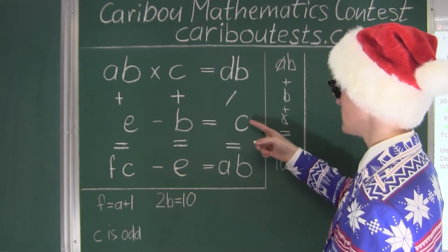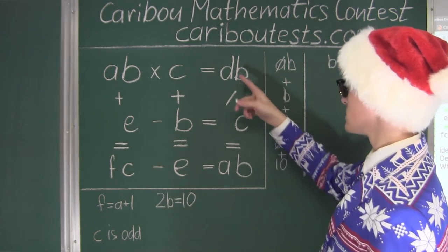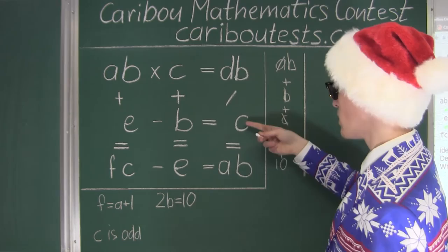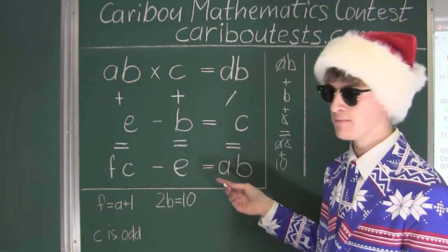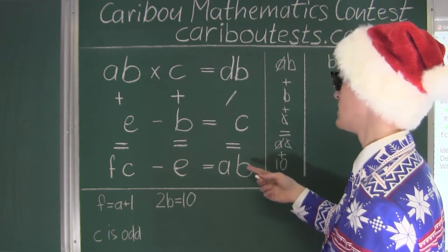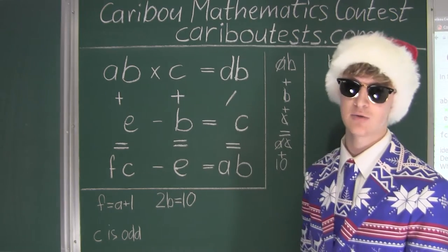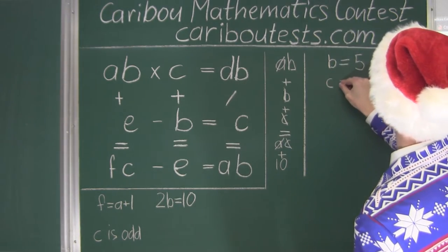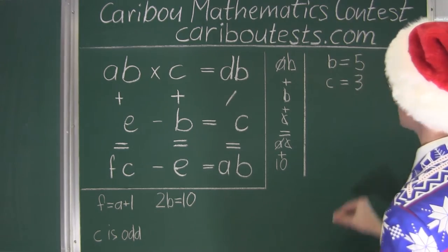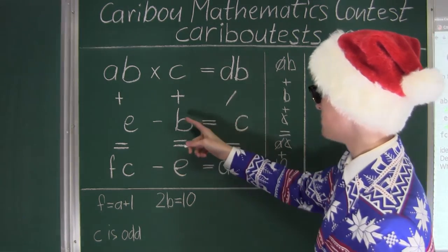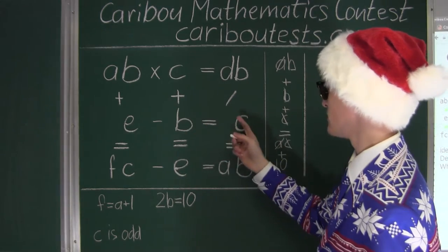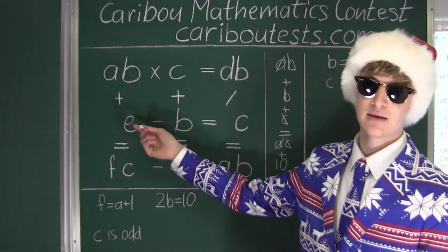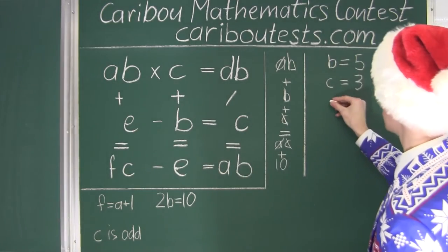Now, of course, if C was one, well, let's look here at this column, DB divided by one. That would just equal DB. But here we have AB. Now this means that C must equal to three. And now since we have C is three and B is five, well, three plus five is equal to eight. That means that E must equal to eight.